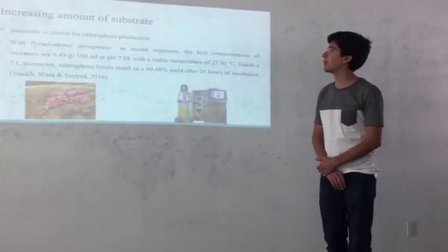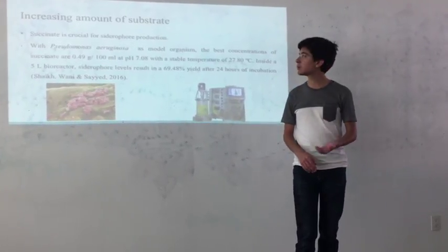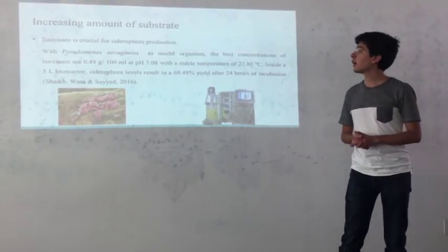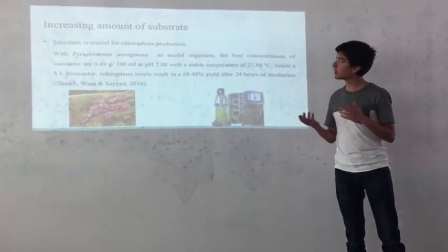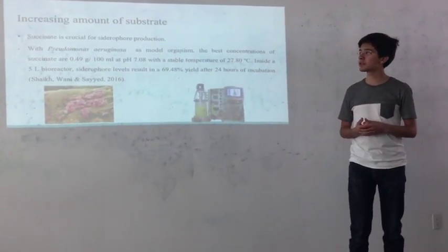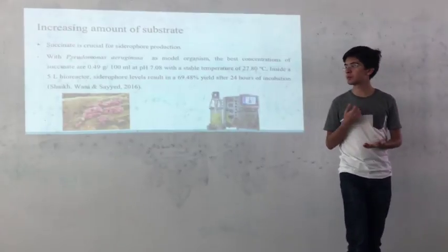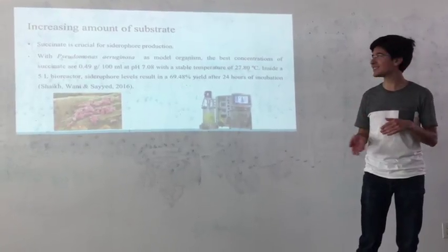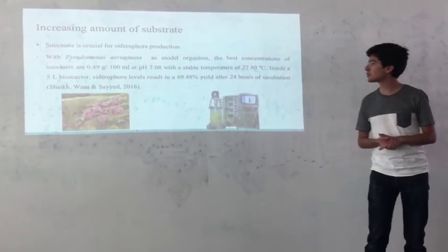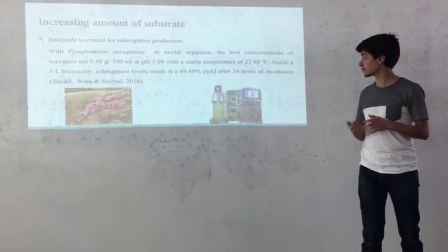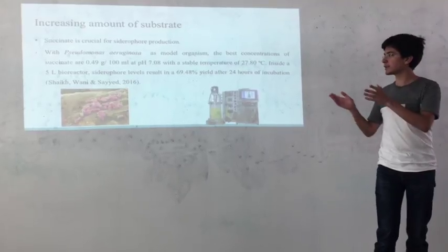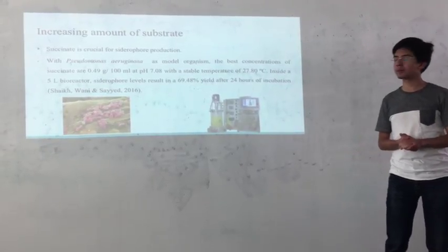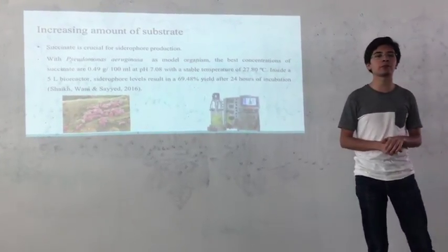The second strategy is increasing the amount of substrate. Several studies show that succinate is a very important substrate for siderophore production. In the case of Pseudomonas aeruginosa as a model organism, the best concentrations of succinate are 0.49 grams per 100 milliliters at pH 7.8 with a stable temperature of 27.8°C inside a five-liter bioreactor. These levels can result in a 69.48% yield after 24 hours of incubation.